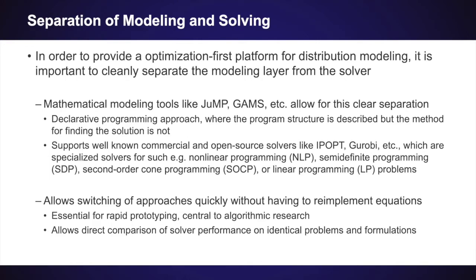So what does creating an optimization-first platform for power systems modeling mean in a practical sense? What requirements do we have? First, separating modeling from the solver algorithms is very important. There exist a number of well-known tools for achieving this kind of abstraction, such as JuMP or GAMS, which result in a declarative programming approach where the program structure is described by the user, but the method for finding the solution is not. In this way, a variety of well-known solvers can be supported to solve a large number of types of mathematical programs, such as nonlinear programming, semi-definite programming, second-order cone programming, or linear programming problems. The direct benefit of this abstraction is that switching between approaches quickly without having to re-implement equations becomes possible, which is essential for rapid prototyping central to algorithmic research, and it allows for direct comparison of solver performance for identical problems and formulations.